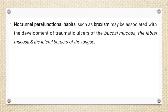One very common cause is bruxism, which is clenching — a parafunctional habit. These parafunctional habits can cause traumatic ulcers in the area where the teeth meet, specifically in the buccal mucosa, labial mucosa, and lateral border of the tongue.